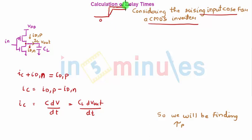If that's the case, initially when my input was 0, can I say that my output was high or VOH? So initially output was VOH.